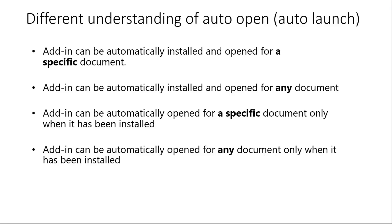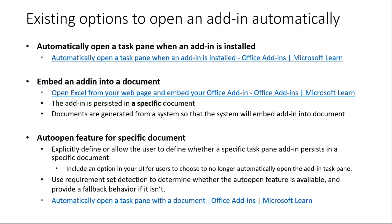Today we have different options to open an add-in automatically. The first option is that you can automatically open the task pane when an add-in is installed. We have documentation here that you can take a look at. From there you can configure which page or which task pane in your add-in you want to auto-open after installation.